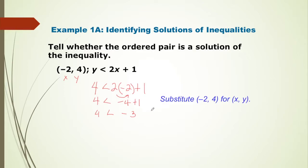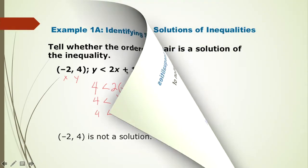This is not, because negative 2 and 4 made the inequality false. Therefore, negative 2 and 4 is not a solution to the given inequality y less than 2x plus 1.